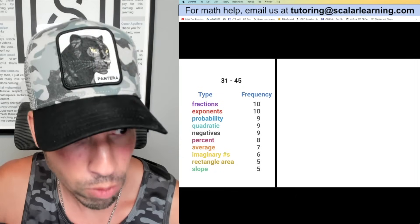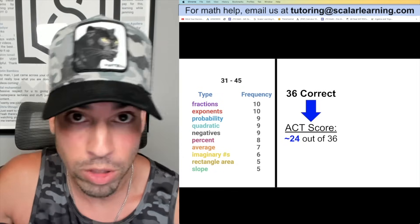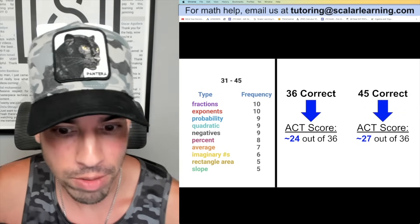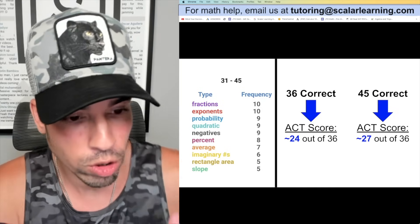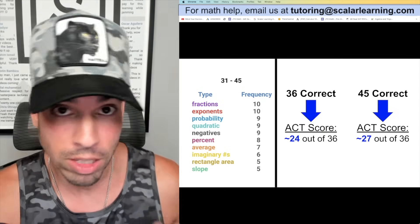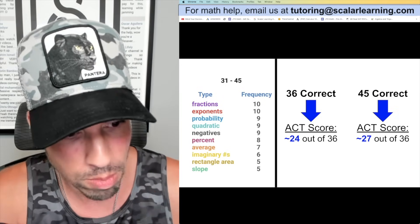Now we're looking at the next batch, 31 to 45, and we're trying to edge up our score. If you get 36 correct, now we're in the 24 zone. And if you're aiming for a nice 27, that would be this first 45 correct. If you're in this category, we're assuming that you've got the fundamentals down, that you're knocking out 1 through 30 already.